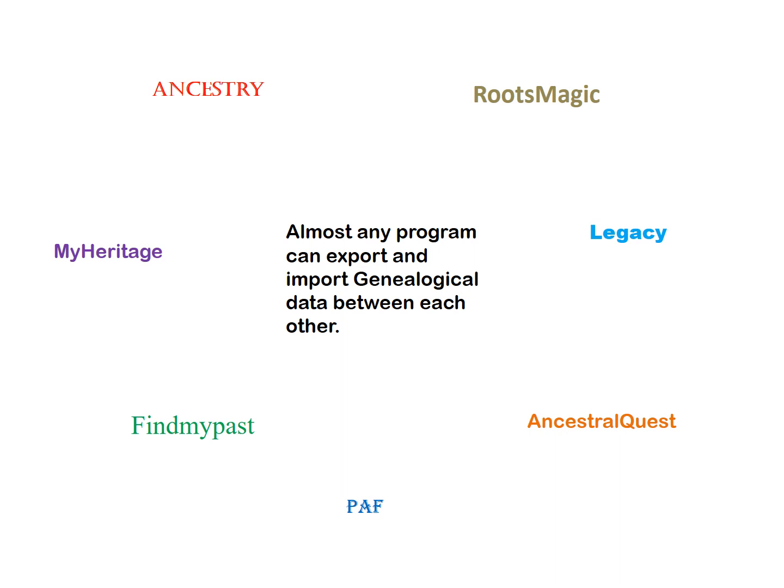These are the most common programs. Ancestry, MyHeritage, and FindMyPast are all partners with FamilySearch. RootsMagic, Legacy, and Ancestral Quest are personal databases that can exchange information back and forth with FamilySearch. RootsMagic is maybe the easiest to use and seems to be first to come up with new things. Ancestral Quest is more like the old PAF program. Legacy has a lot of nice features and a nice layout, but it's a little more complicated to use.